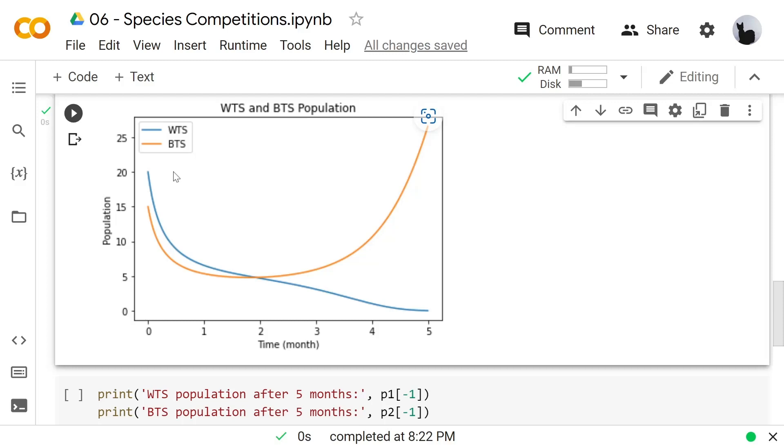Looks like the WTS populations is reducing quickly after 2 months and the BTS populations is increasing exponentially after the 2nd month until the 5th month. And we might ask why does this happen?